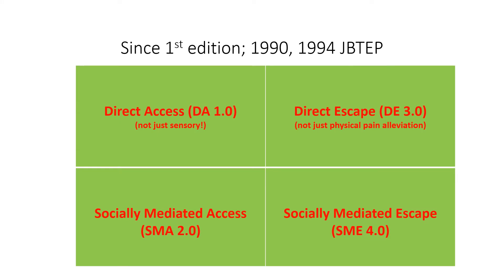At the heart of the Sipani Behavioral Classification System are four major categories. I want to bring your attention to the fact that I had these four categories named this way in two journal articles that appeared in 1990 and 1994 in the Journal of Behavior Therapy and Experimental Psychiatry. These four categories have also been the mainstay since the textbook's first edition in 2007.